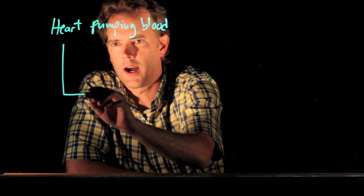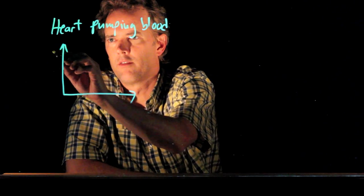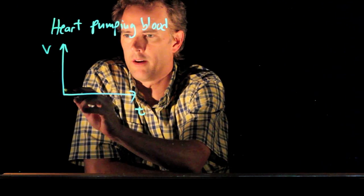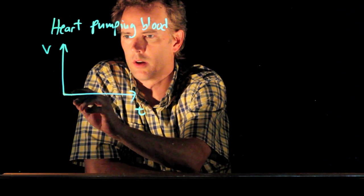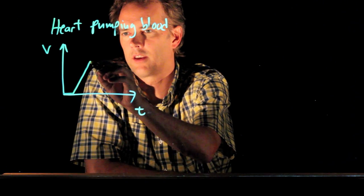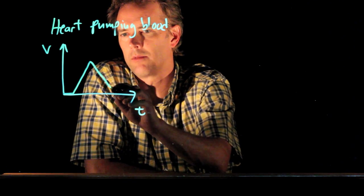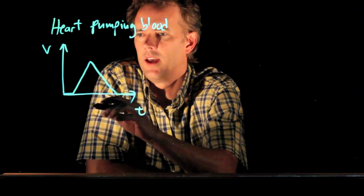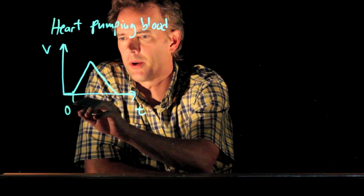So if we plot a typical velocity versus time curve for one beat of your heart, what does the blood look like? It looks like this. It's not moving and then it shoots up to a positive velocity and then it decays back down to zero velocity, and this happens pretty quickly.